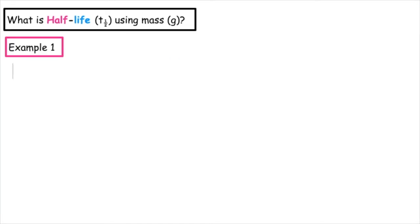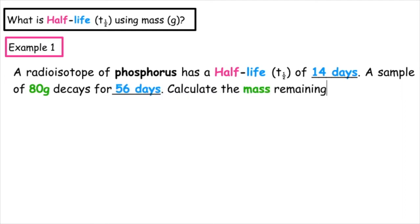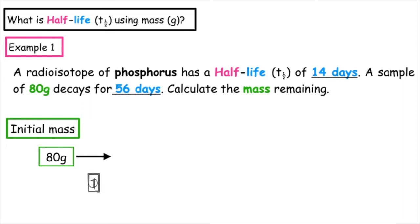Example one: a radioisotope of phosphorus has a half-life of 14 days. A sample of 80 grams decays for 56 days. Calculate the mass remaining. We are working in mass, so we start with our initial mass of 80 grams. After one half-life, half of 80 is 40 grams. One half-life is 14 days. We keep repeating this until we reach a total of 56 days.